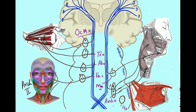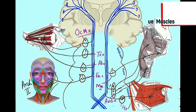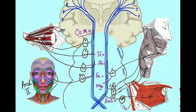The hypoglossal nucleus is present in the medulla. The upper motor neuron in the pyramidal tract descends, reaches the nucleus, synapses there, and the lower motor neuron moves toward its destination — the skeletal muscles of the tongue. All of these are corticonuclear fibers, whose destination is brainstem nuclei belonging to cranial nerve components: general somatic efferent and special visceral efferent. This concludes the topic of descending tracts.